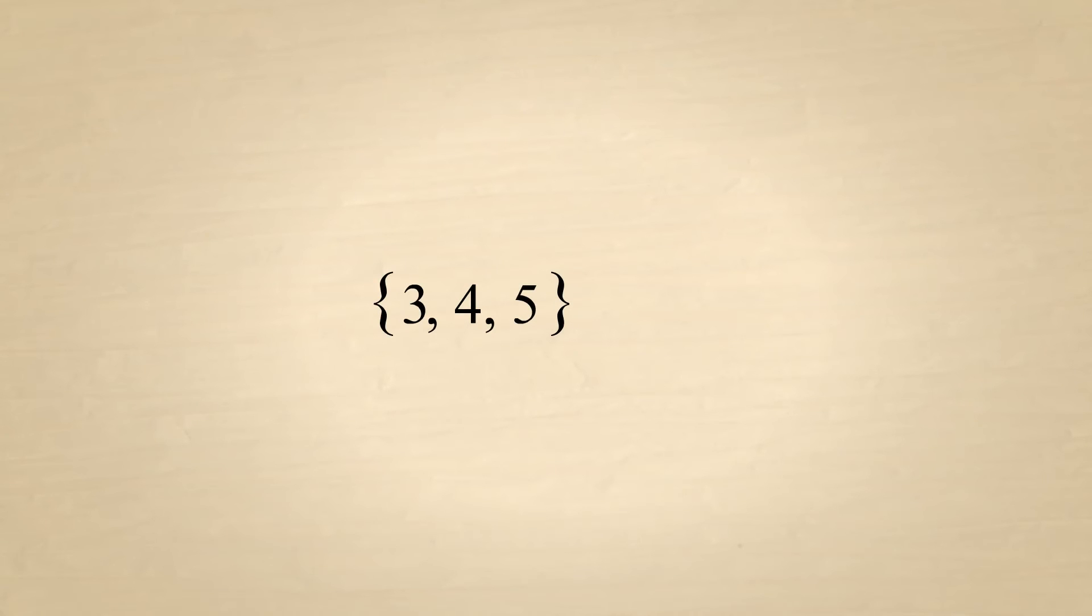For sets with lots of members, if the list of elements continues in some obvious way, an ellipsis can be used to indicate a continuation of the pattern. For example, the set of integers between 3 and 100 could be written like this. This can be very useful when specifying the membership of infinite sets. For instance, the set of natural numbers can be written with an ellipsis following the first few numbers to indicate that the list continues forever. Likewise, the set of integers can be written with an ellipsis on either side to indicate that the numbers go on forever in both the positive and negative directions. Fewer or more elements can be listed as long as the pattern is clear.